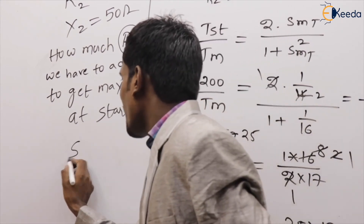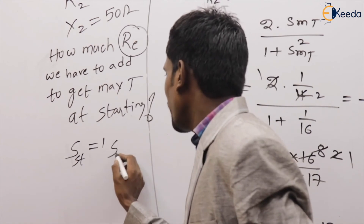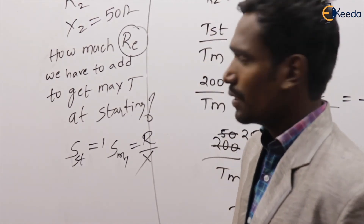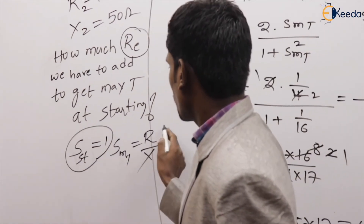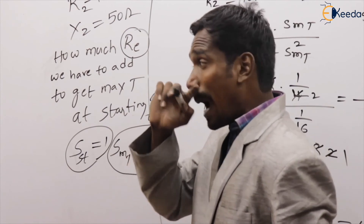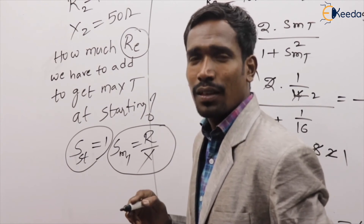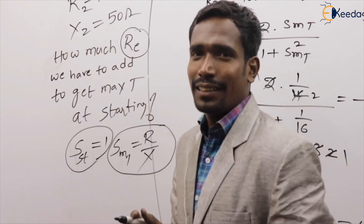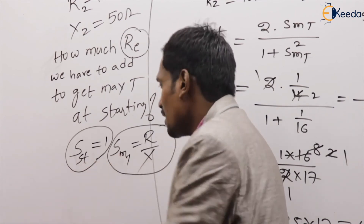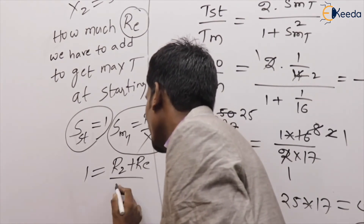The slip at starting equals 1. The slip at maximum torque equals R/X. To get maximum torque at starting, both must be equal: 1 = (R2 + R_E) / X2.